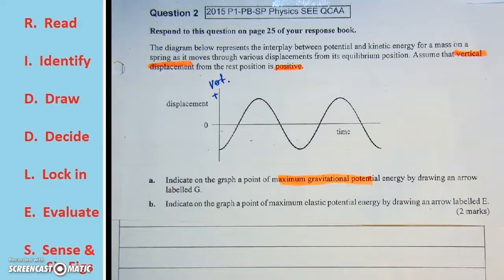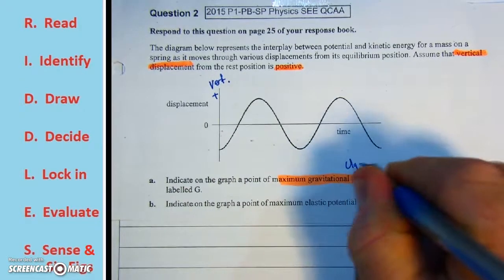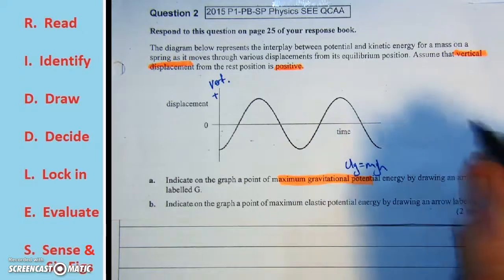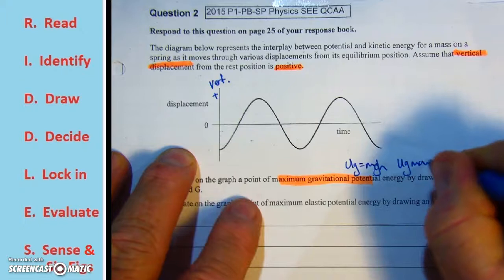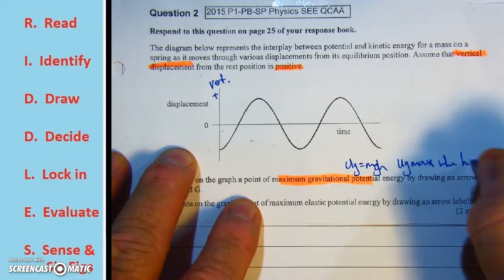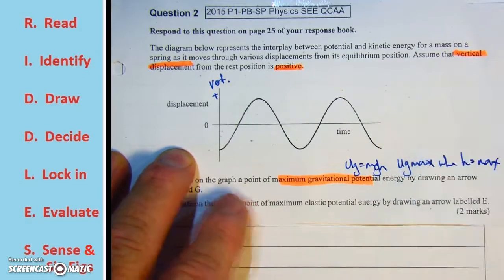That's going to be gravitational potential energy. Remember, is given by MGH, M times G times H. So G is maximum when height is maximum.